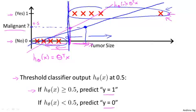It's pretty clear we really should be separating the two classes somewhere around there. But somehow by adding one example way out here to the right, this example really isn't giving us any new information. It should be no surprise to the learning algorithm that the example way out here turns out to be malignant. But somehow adding that example out there caused linear regression to change the straight line fit to the data from this magenta line out here to this blue line over here and caused it to give us a worse hypothesis.